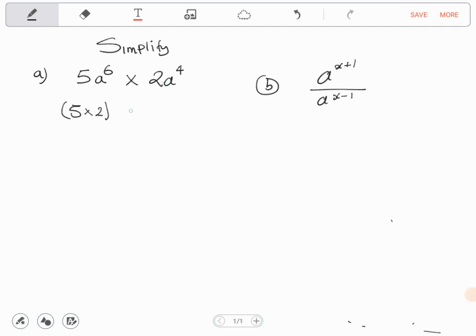Then these bases are the same. a to the power 6 times a to the power 4. What is 5 times 2? That is 10.